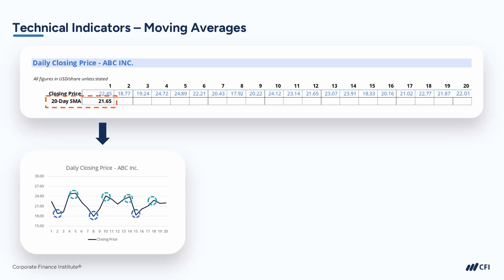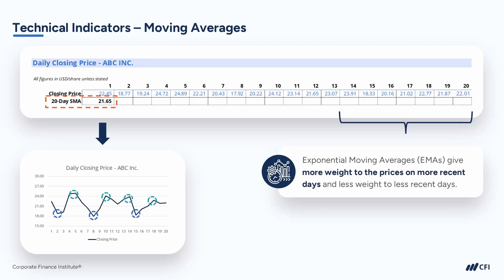Technical analysts will sometimes also use exponential moving averages, or EMAs, which give more weight in the average calculation to the price on the most recent days and less weight on the price in less recent days, in an attempt to make their model more responsive to recent information. This is called adding a recency bias to the analysis.